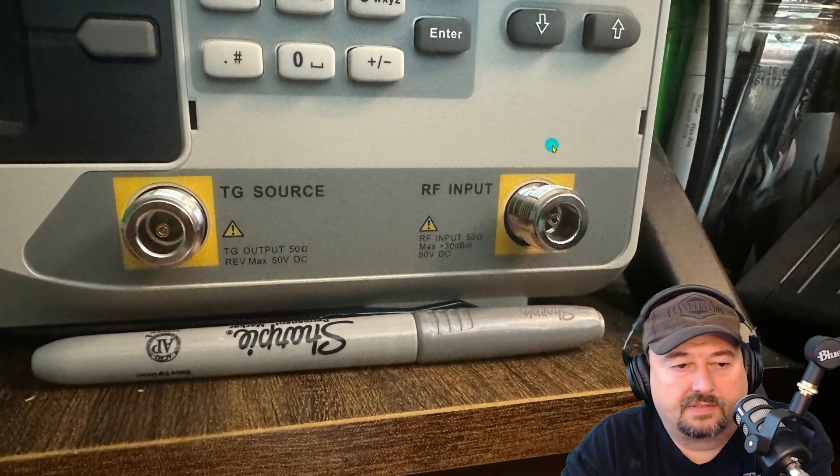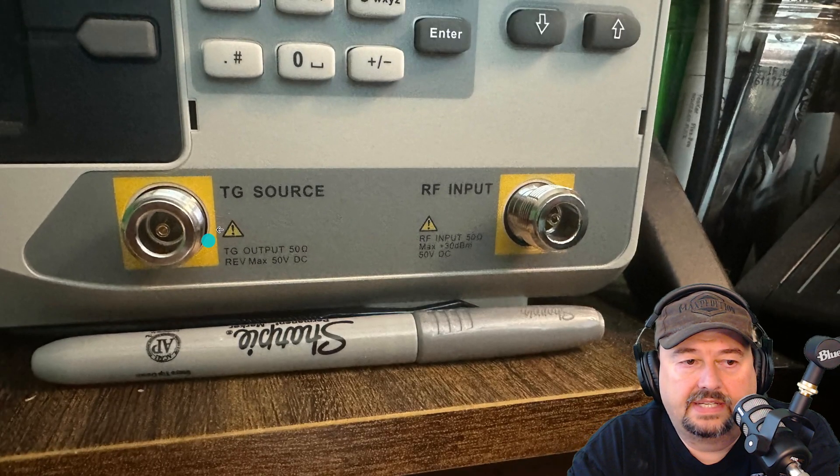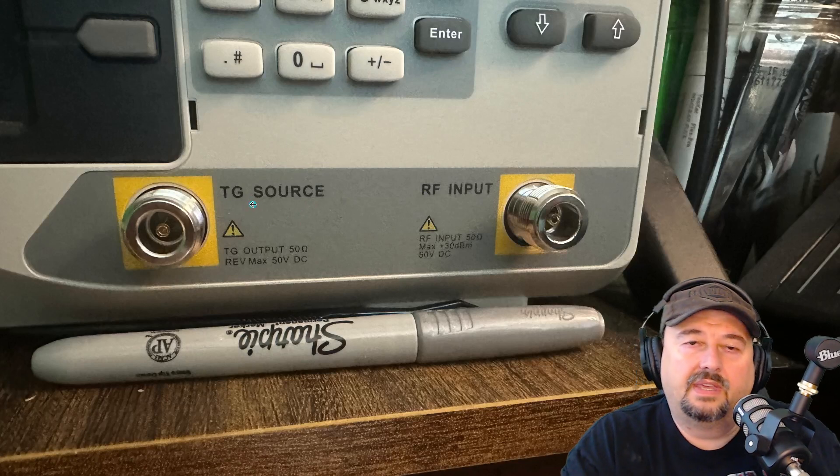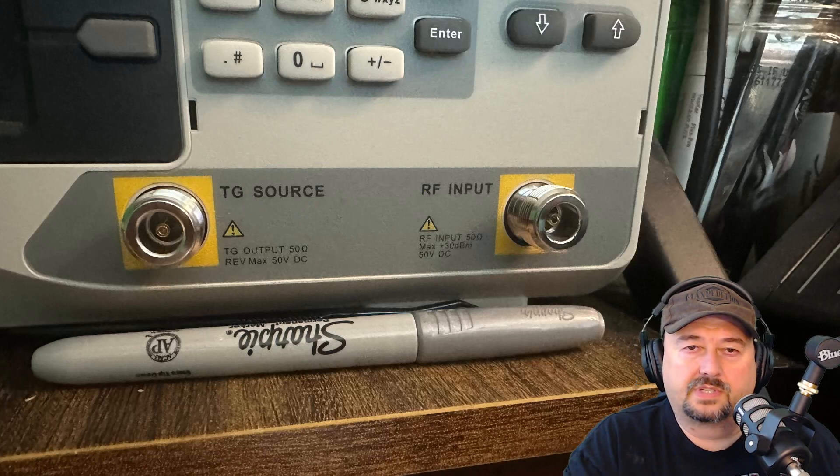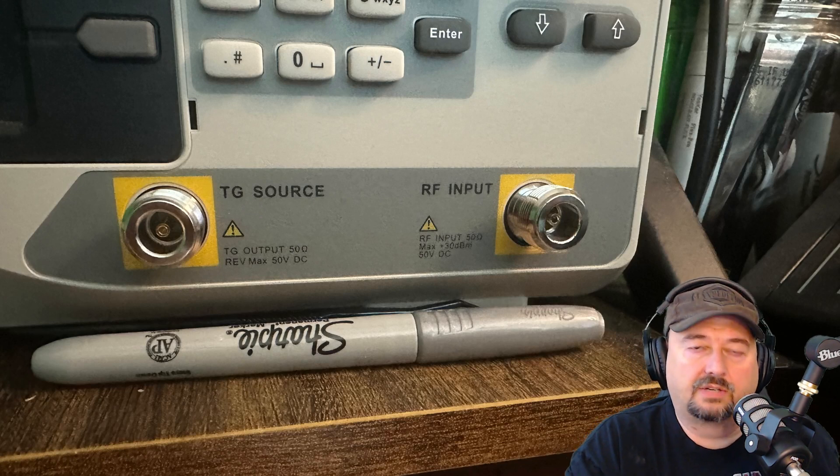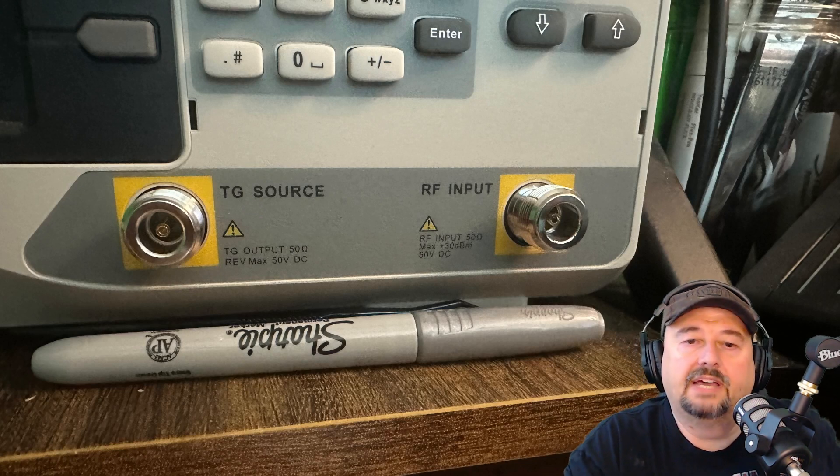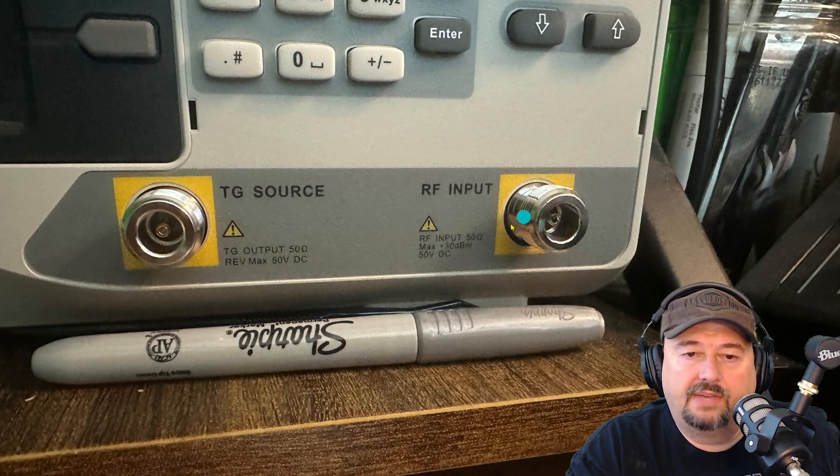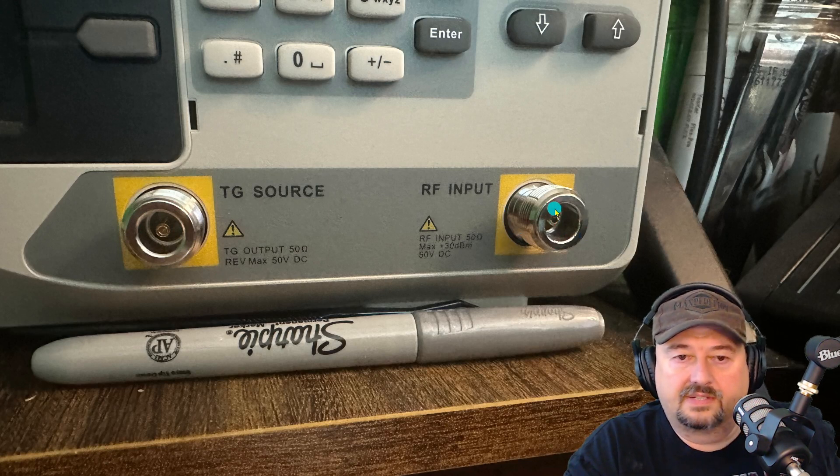If you take a look at the spectrum analyzer here, you can see that I have these two different connectors. One is called a TG source. That is a tracking generator source that outputs a signal across a specific set of frequencies at a known level. And then we hook a coaxial cable up to this. This is a female N connector. And then you have an input that comes in over here where it says RF input.